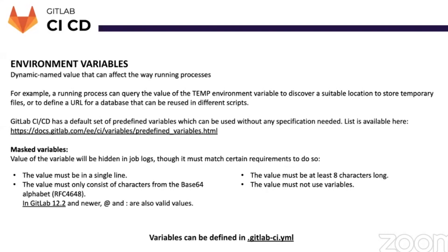If you're hard-coding something in the pipeline, it will actually make the code very brittle. So someday if you want to move this pipeline from one provider to another, it won't be possible without modifying the code. GitLab has a huge list of predefined variables that can aid in building robust and flexible CI/CD pipelines.